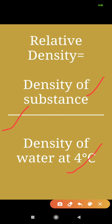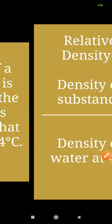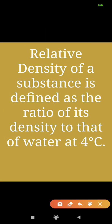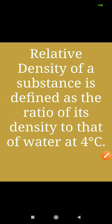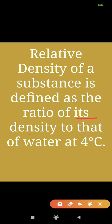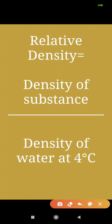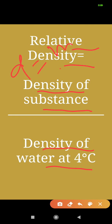We can define it in more ways. Relative density of a substance is defined as the ratio of its density to that of water at 4 degrees Celsius. As we know, density is equal to mass divided by volume — this applies to both the substance and water.